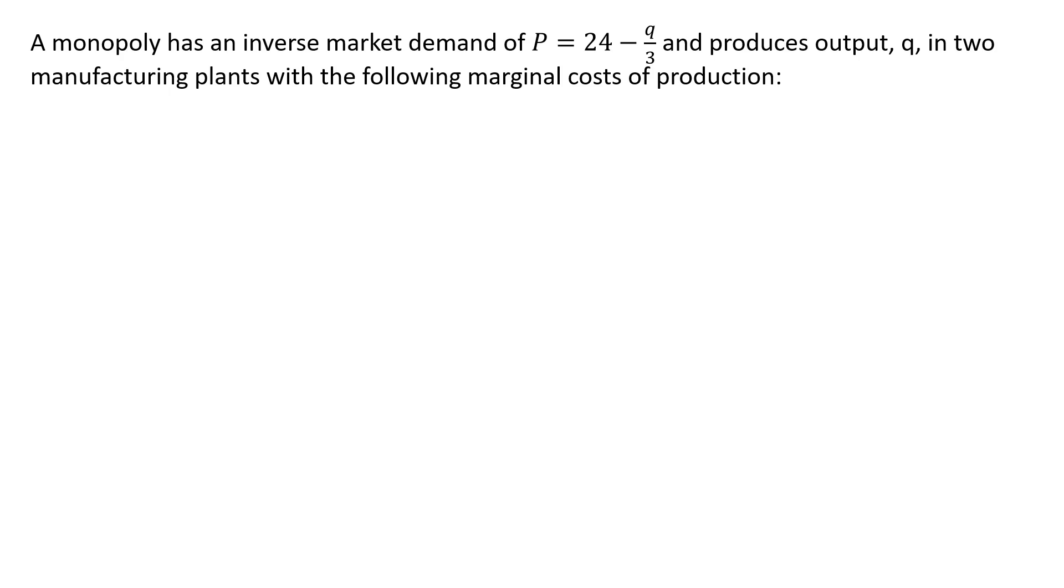A monopoly has an inverse market demand of the following and produces output Q in two manufacturing plants with the following marginal cost of production. In plant one, the marginal cost equals 0.5Q, where the subscript represents the plant. And in plant two, the marginal cost equals Q subscript two.